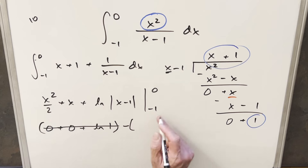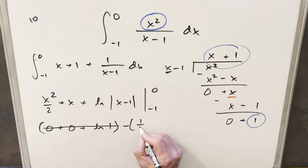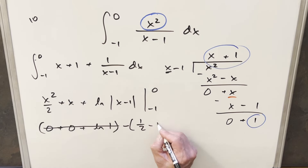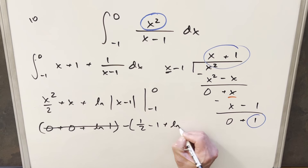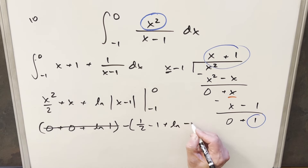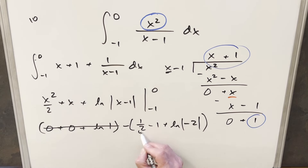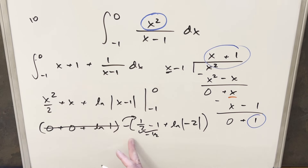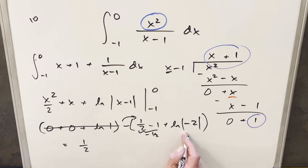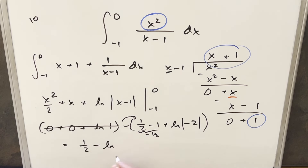Plugging in minus 1: x squared over 2 gives one half, x gives minus 1, and natural log of the absolute value of minus 2 is natural log of 2. Distributing the minus sign: minus one half becomes positive one half, minus times minus 1 gives plus one half, and minus natural log of 2 remains. So the final answer is one half minus natural log of 2.